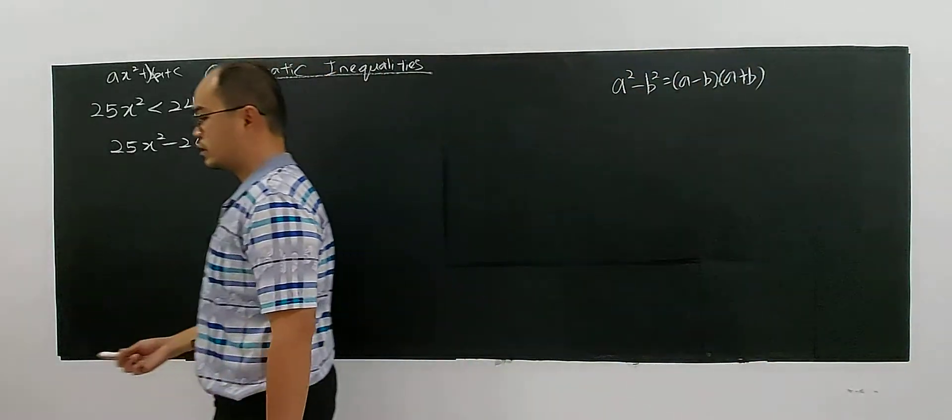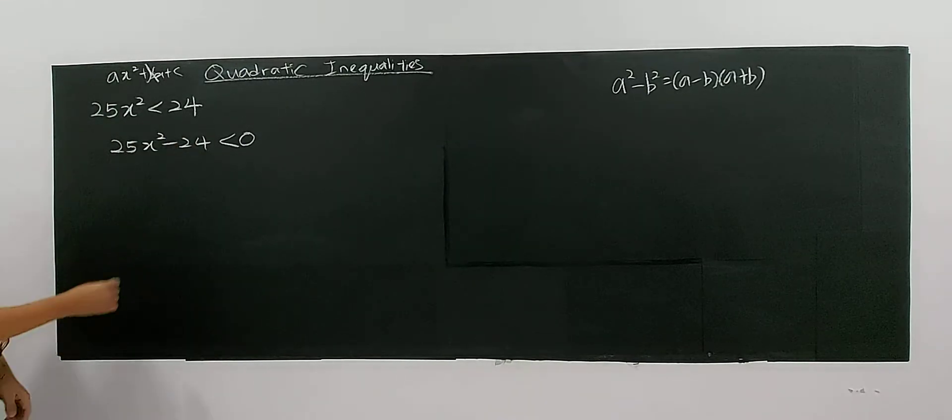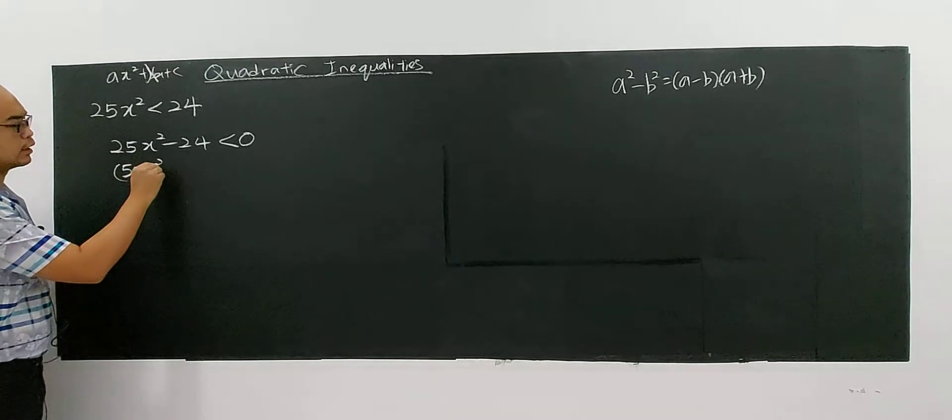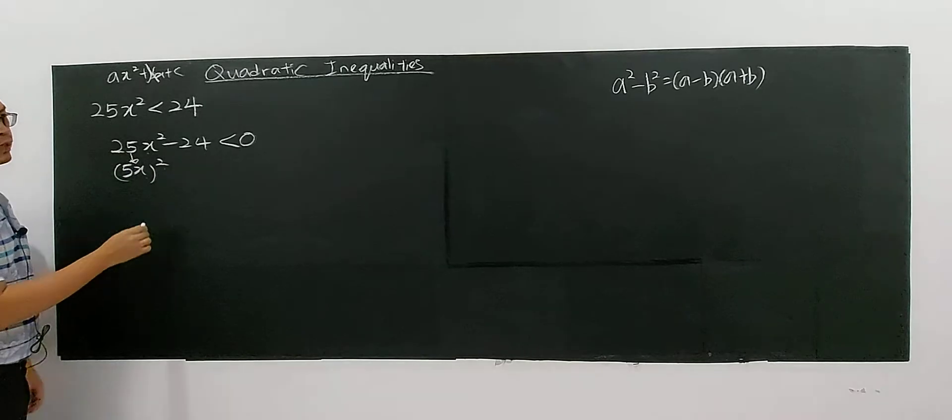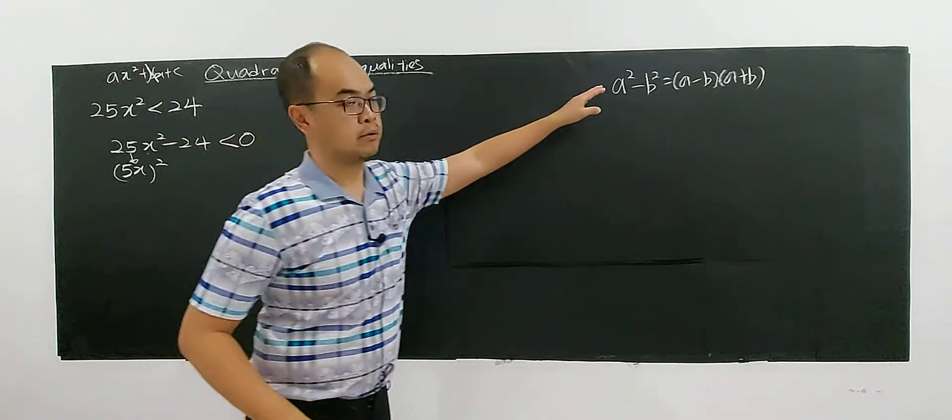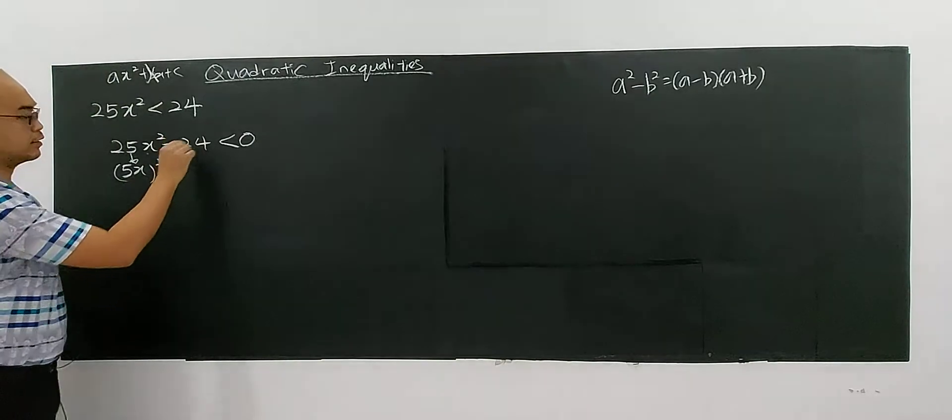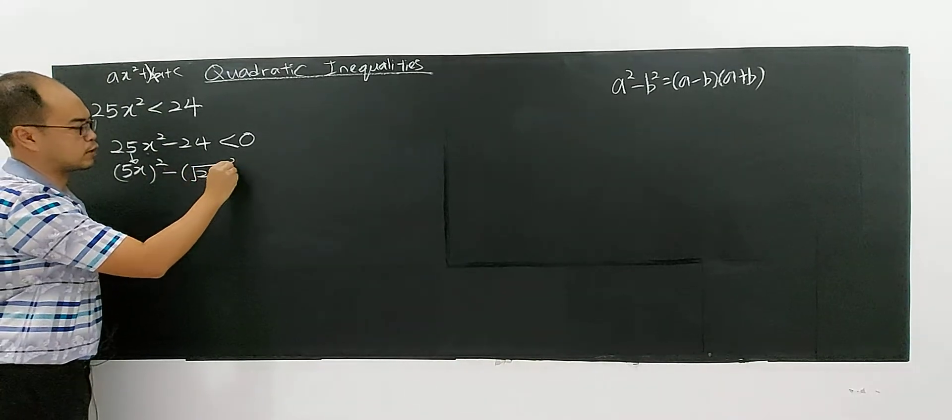Because 24 is not a perfect square, you can rewrite this as 5x to the power 2. For 25x square, 5 power 2, x power 2. I try to write in this form with a square minus b square. So how about negative 24 here? I can rewrite it as square root of 24 square, less than 0.